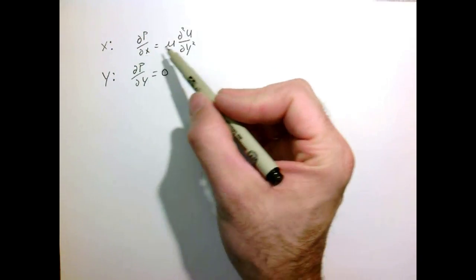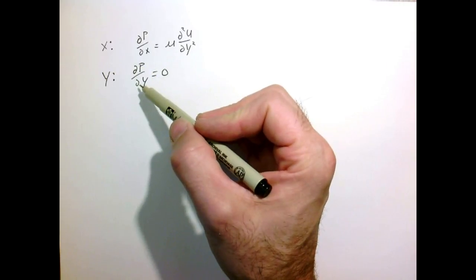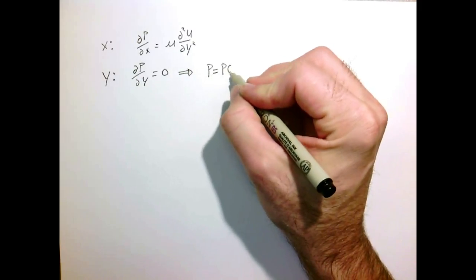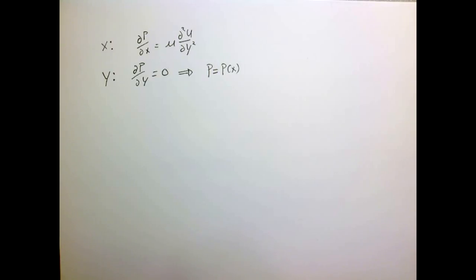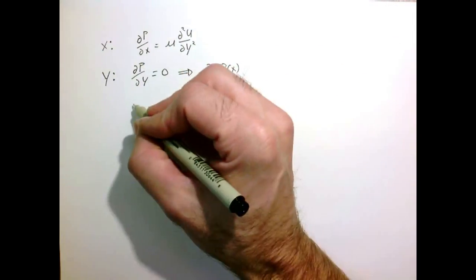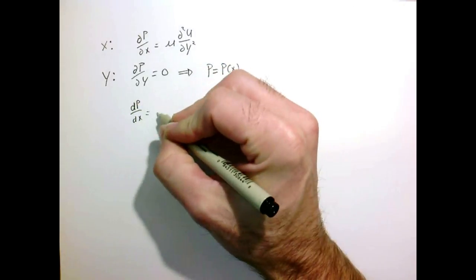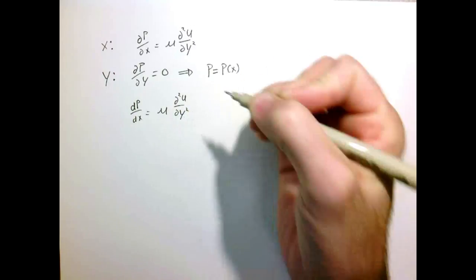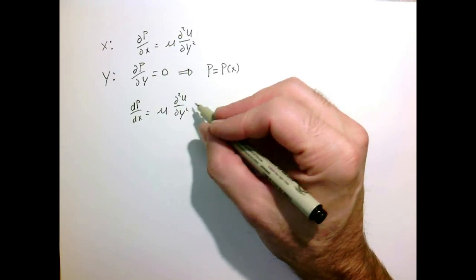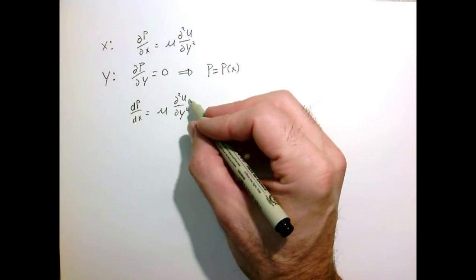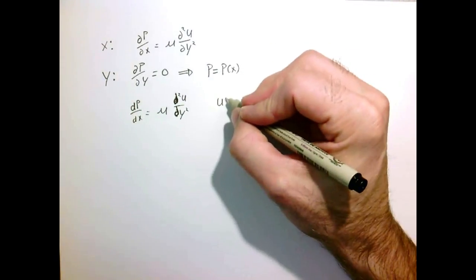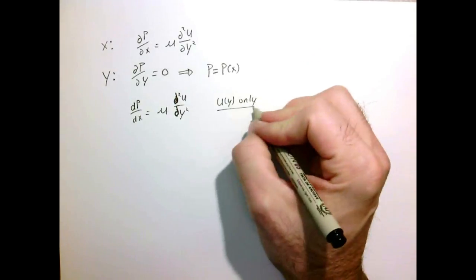We have that the pressure gradient in x balances the viscous stresses, and the pressure gradient in y equals zero. Integrating that directly tells us that p is a function of x only — pressure can only change in the x direction. So the partial derivative can be written as dp/dx, and the x-momentum equation becomes: dp/dx equals the viscosity times the second derivative of u with respect to y.